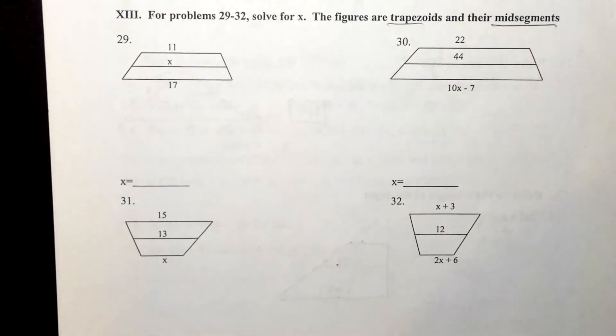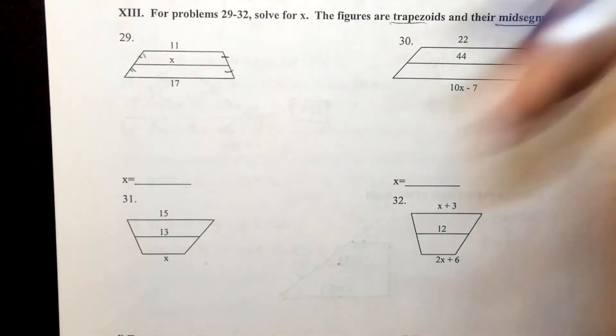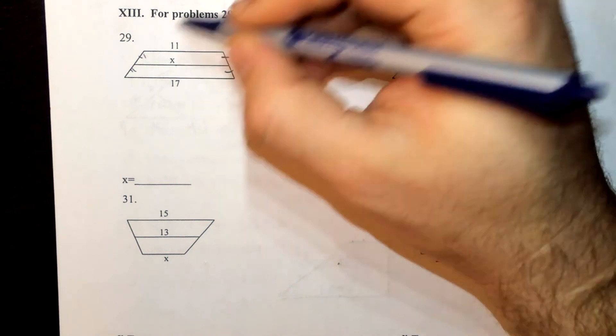So we can go ahead and assume that without having to have the markers on there. Remember, the midsegment is always the average of the two bases.